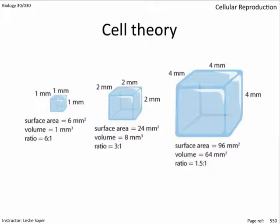If a cell gets bigger, it will require more nutrients and excrete more waste. It will need a plasma membrane with a surface area that increases at the same rate as its volume. But as you can see from these diagrams, that just isn't the case — when a cell gets bigger, the surface area of the plasma membrane doesn't increase proportionally.